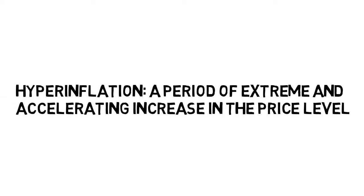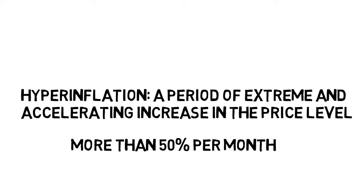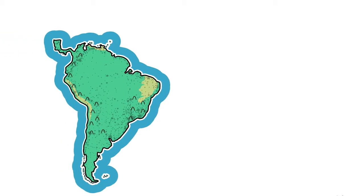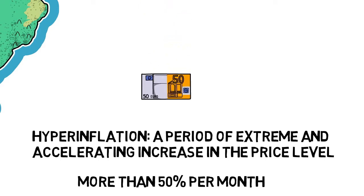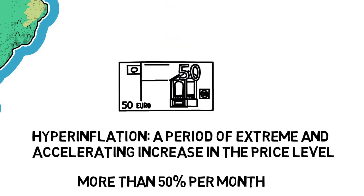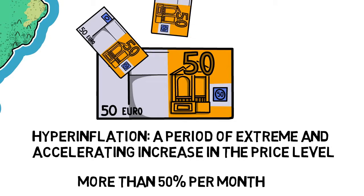If this goes a bit further it can tend towards something called hyperinflation. This is a period of extreme and accelerating increase in the price level — some people define this as more than 50 percent inflation per month. We have examples of this even recently in Venezuela, where the inflation rate was estimated to be 130,000 percent in 2018. This is hyperinflation usually due to excessive government deficits and excessive money supply printing.